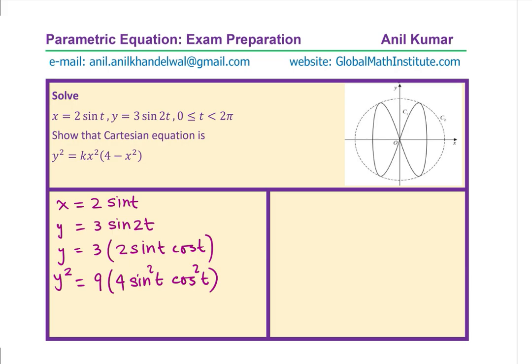Now, from the very first equation given to us, if I square, what do I get? I get x² is equal to 4 sin² t. So I can replace 4 sin² t with x². How about cos² t? We can write cos² t as equal to 1 minus sin² t. These are the substitutions which I am going to do in my equation.